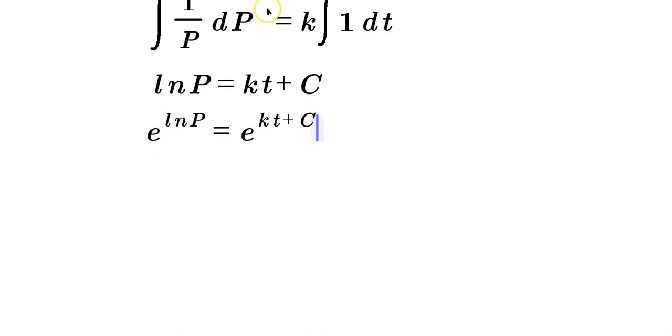This is allowed because e and ln are inverse functions. We have ln, so you've got to get rid of it somehow. So then you exponentiate, and you can cross these off, which means all that remains is P equals e raised to the kt times e raised to the C.